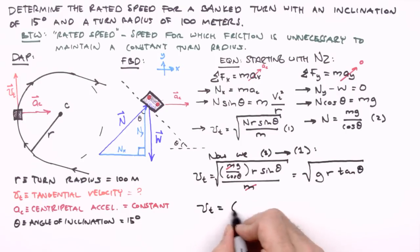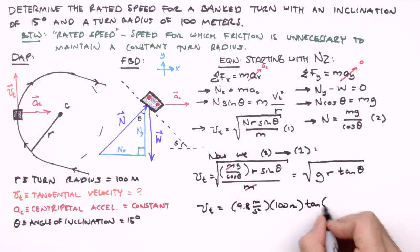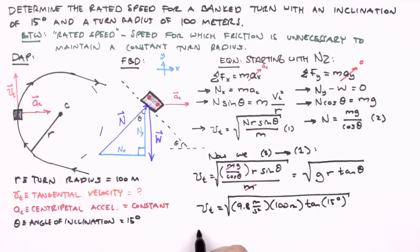Inserting our values for g, r, and theta, we find out that the tangential velocity of a body undergoing uniform circular motion around a banked curve of these specifications, and therefore the rated speed of the turn, is 16.2 meters per second. Which works out to be about 35 miles per hour.